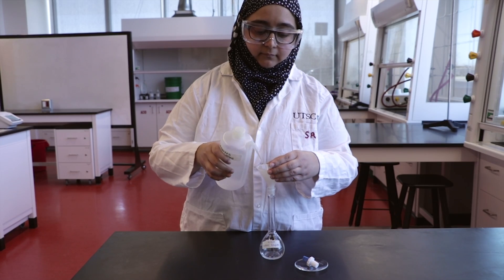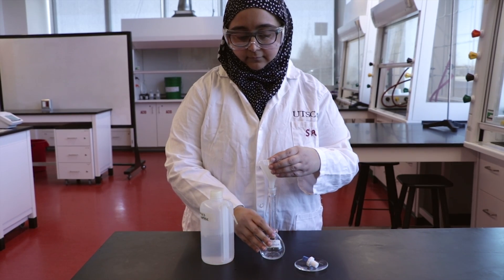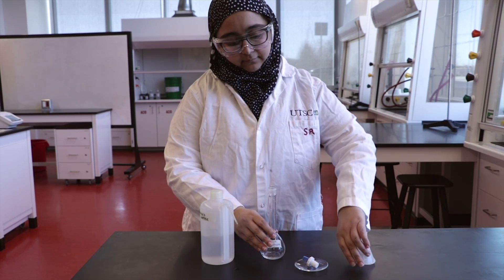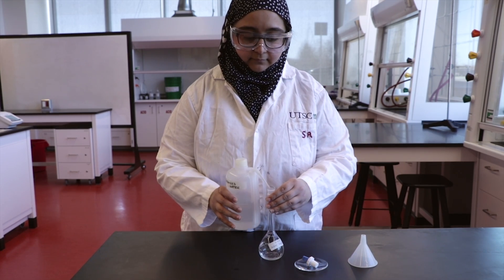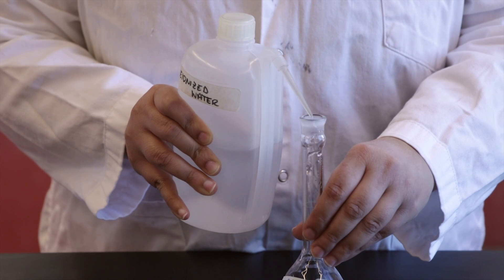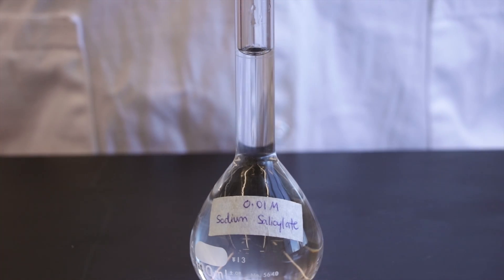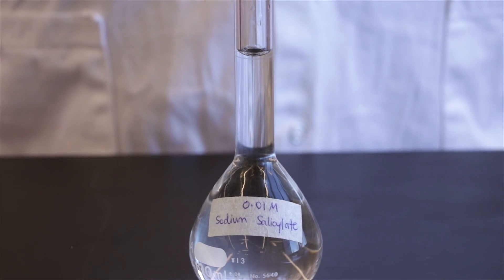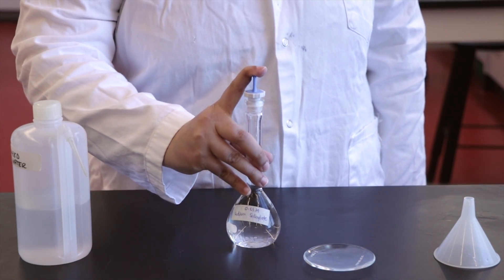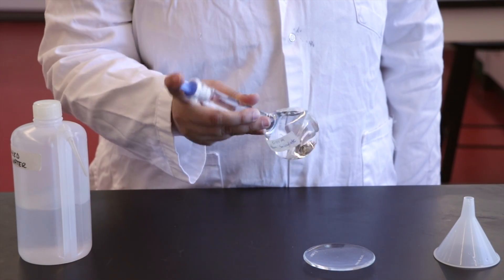Rinse the funnel with distilled water to wash down any powder adhering to the sides and fill the volumetric flask to the mark. Once the solution reaches the bottom of the neck of the flask, use a dropper to accurately fill to the mark. Invert the solution 20 times before proceeding to the next step.